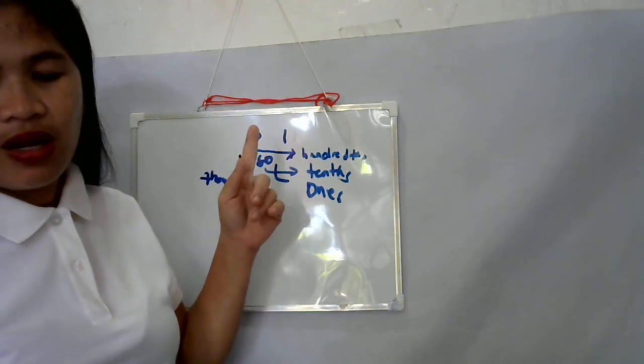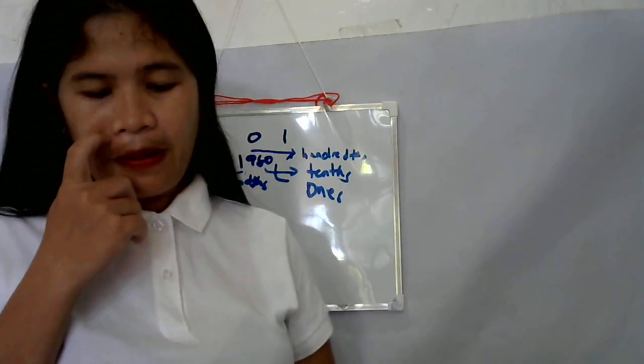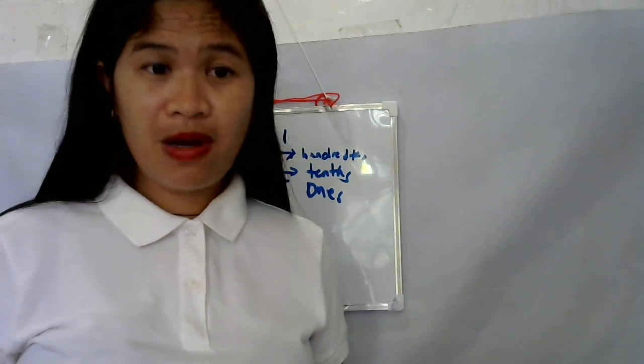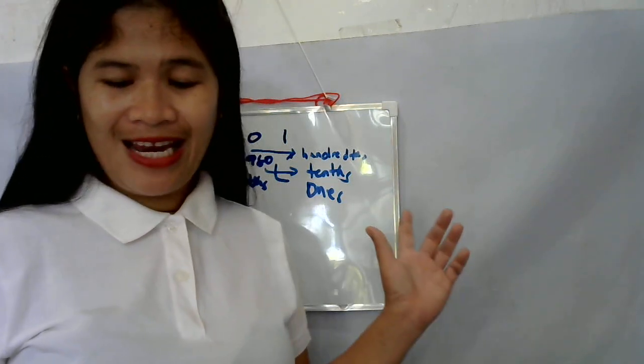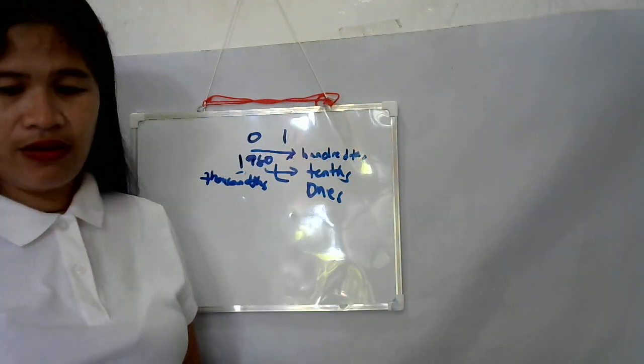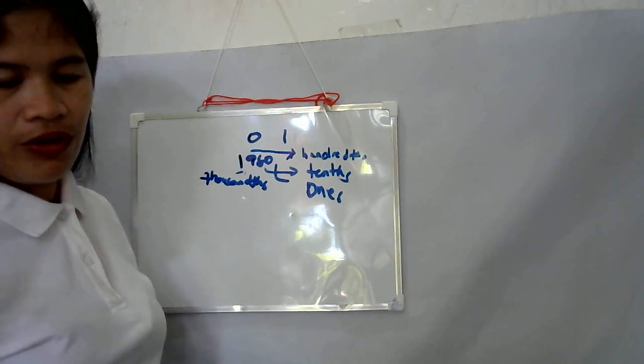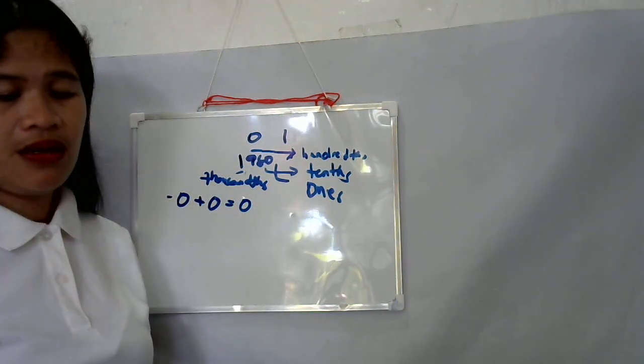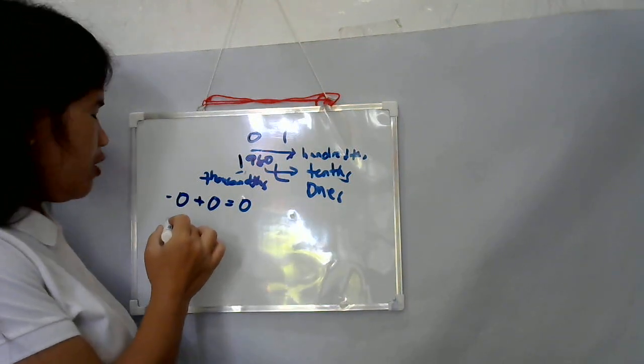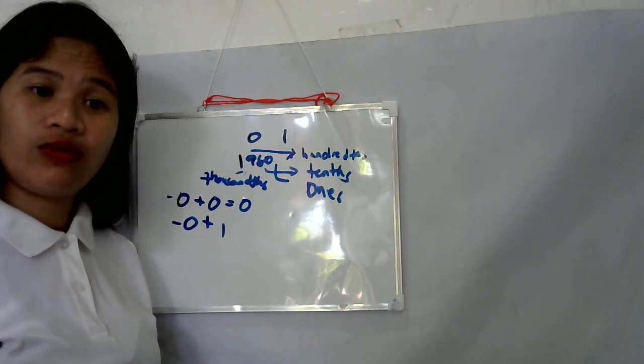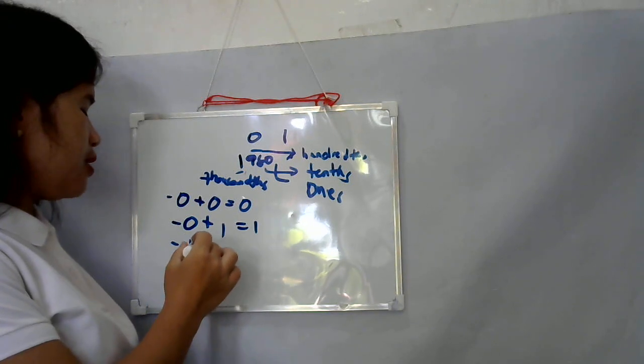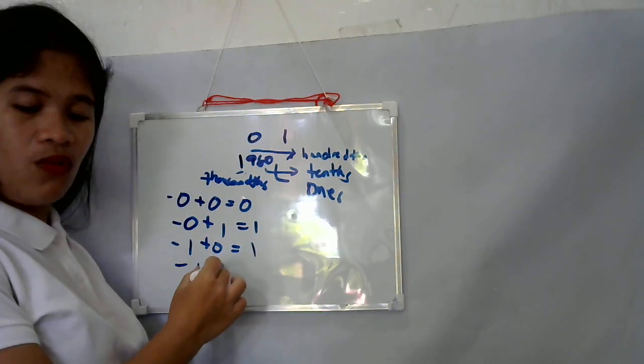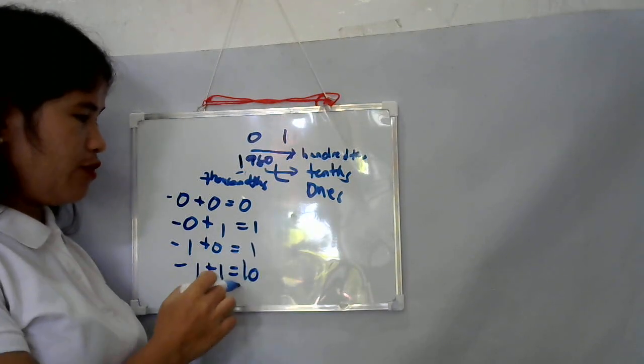In binary addition rules, any binary number can be easily added. Here are the four rules. First: zero plus zero always equals zero. Second rule: zero plus one is always one. Third: one plus zero, the answer is one. Fourth: one plus one is always ten.